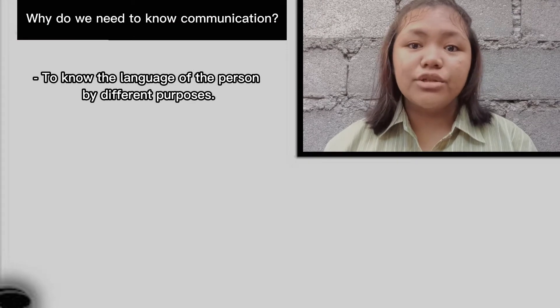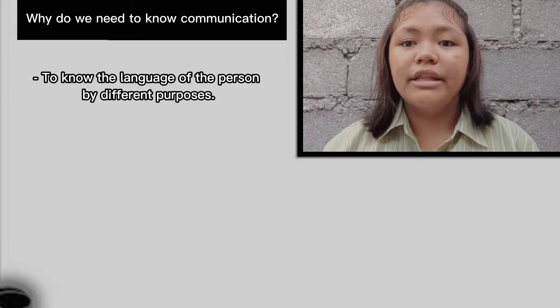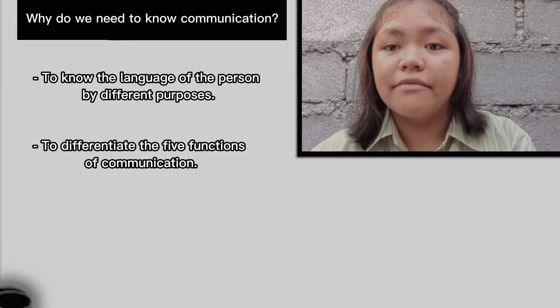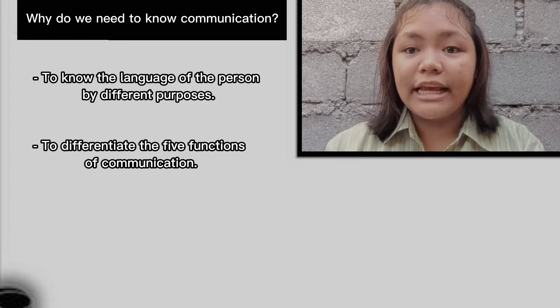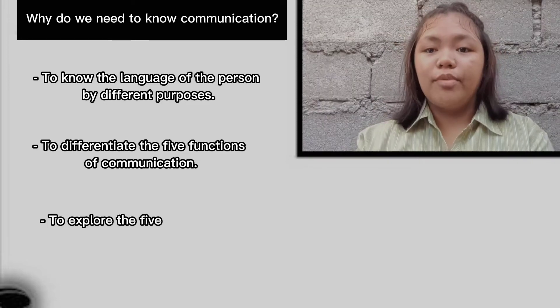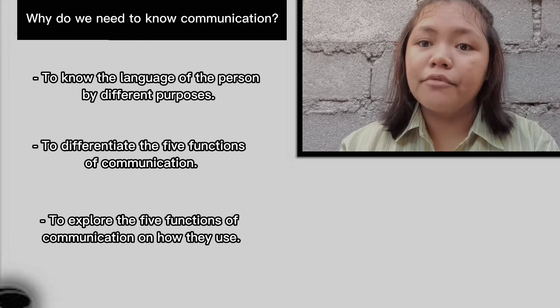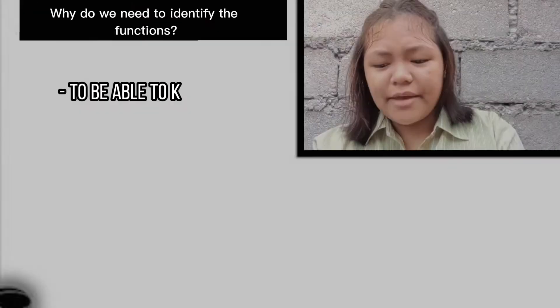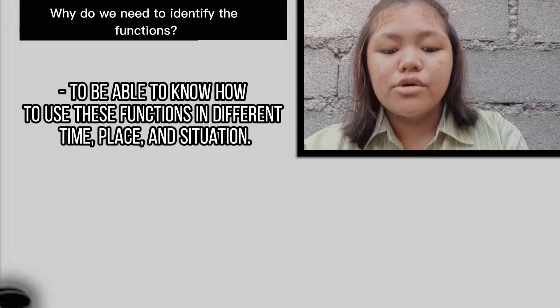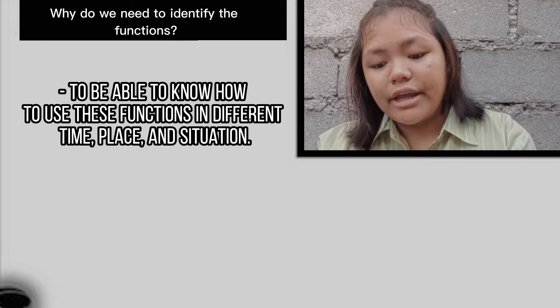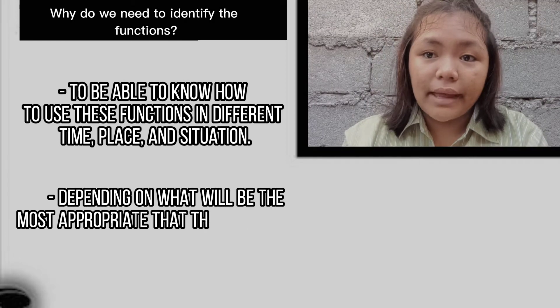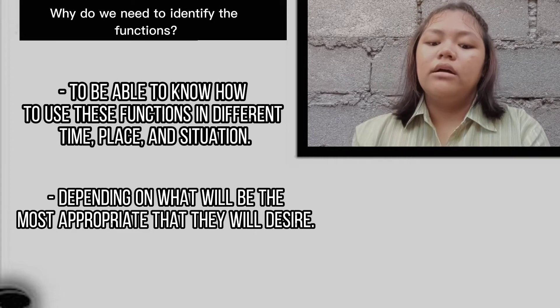First, to know the language of the people for different purposes. Second, to differentiate the first five functions of communication. And last, to explore the first five functions of communication — how they are used and why we need to identify them. The answer: to be able to know how to use the functions in different times, places, and situations, depending on what is appropriate.